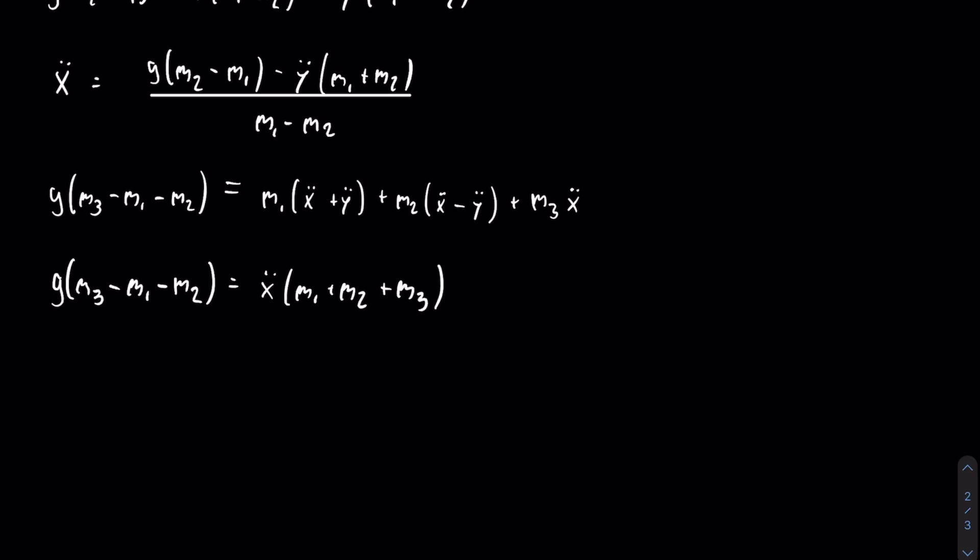Then you look at y double dot. As you can see, it's multiplied by an m1. It's multiplied by a negative m2. And that is it. So you can rewrite that part as y double dot times m1 minus m2.